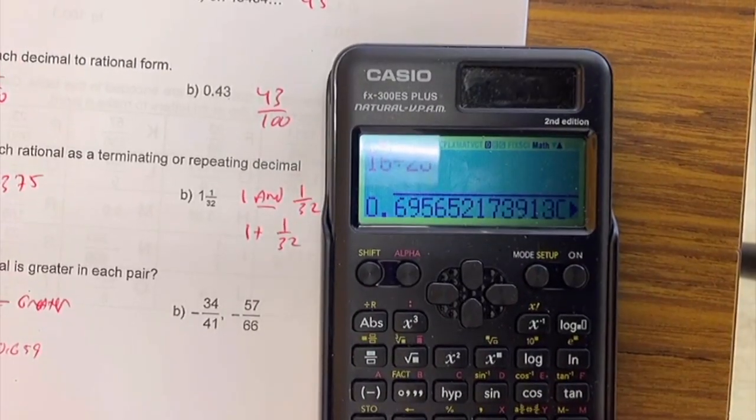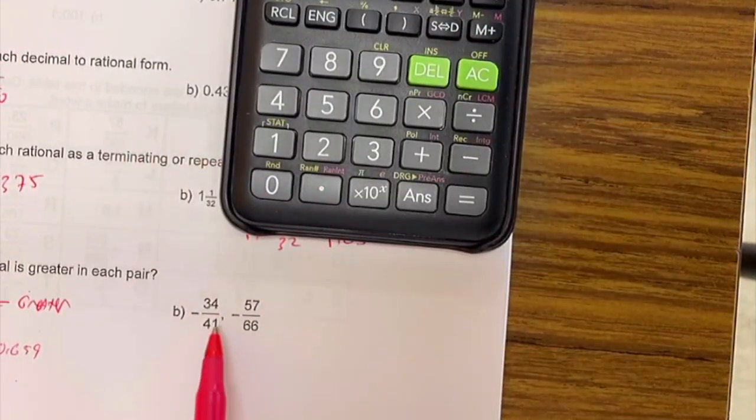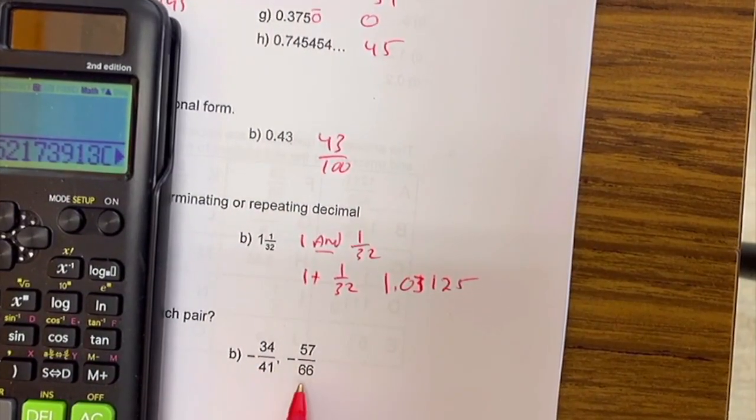For the next one, these are both negatives. 34 over 41. We'll do the same thing. They're kind of close to call.